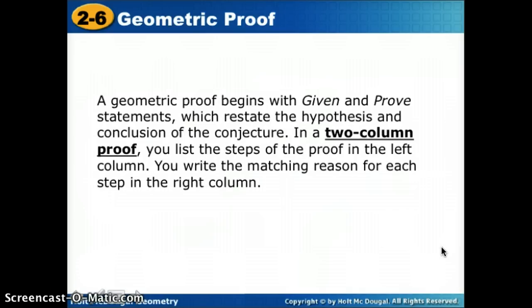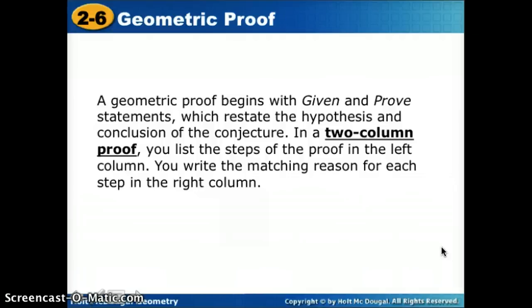Now we're going to give our proofs a formal structure. A geometric proof begins with 'given' and 'prove' statements, which restate the hypothesis and conclusion of the conjecture. In a two-column proof, you list the steps of the proof in the left column and write the matching reason for each step in the right column. The 'given' is like our hypothesis, and the 'prove' is like our conclusion.